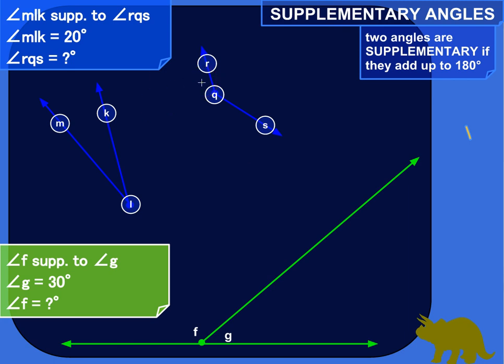Let's start with the blues up here. So we've got two angles here, angle MLK and angle RQS. And this way of describing angles is based on their vertex, the point where the two lines meet that form the angle, and points on the rays that form the angle.